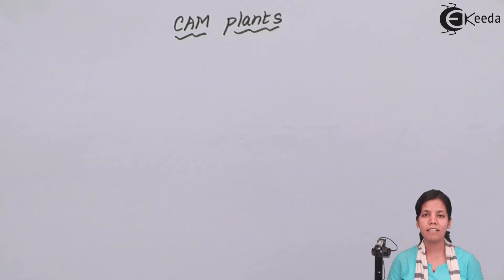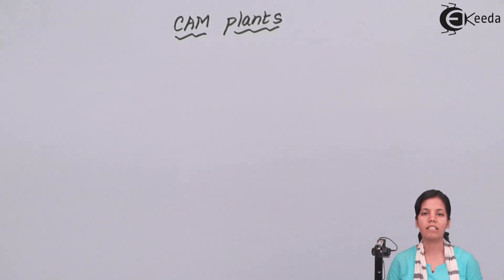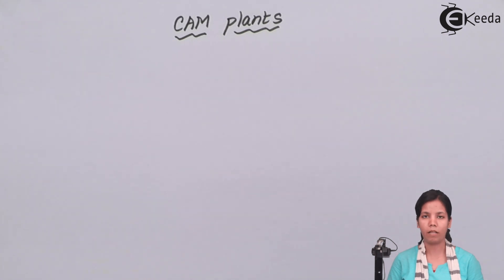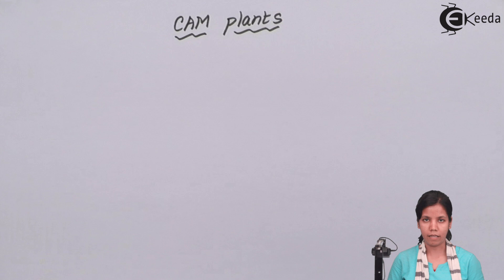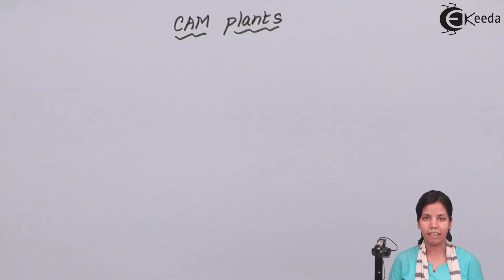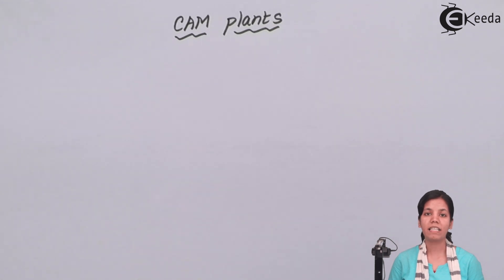The answer is the CAM pathway, or Crassulacean Acid Metabolism. What happens in the CAM pathway is the stomata of desert plants, which is closed during daytime, opens at nighttime, and the cycle of CAM pathway takes place at night using certain molecules.